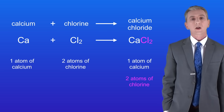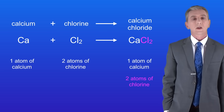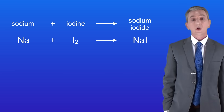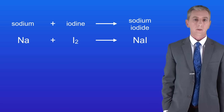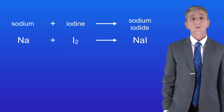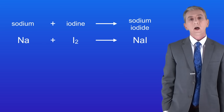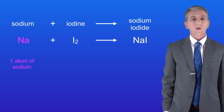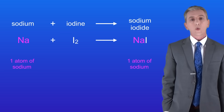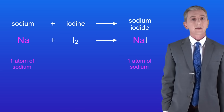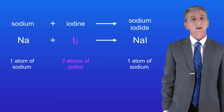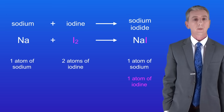In the exam you could be asked to balance a chemical equation, so let's see how to do this. Here's another chemical equation and this one's not balanced: sodium plus iodine making sodium iodide. The first thing we need to do is count the number of atoms of each element on the left hand side and the right hand side. On the left hand side we've got one atom of sodium and on the right hand side we've also got one atom of sodium, so the sodium atoms are balanced. On the left hand side we've got two atoms of iodine but on the right hand side we've only got one atom of iodine, so the iodine atoms are not balanced.